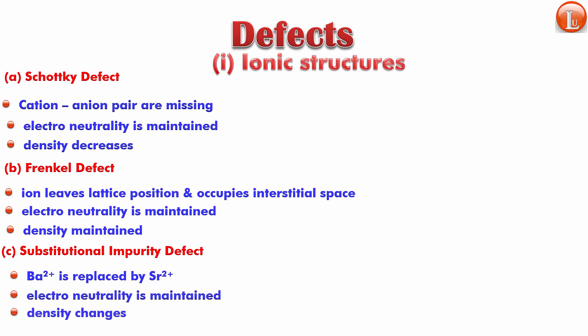The next is called interstitial impurity. Obviously something else comes and occupies the interstitial position. For example, hydrogen is trapped in a titanium carbide. So in a titanium carbide structure, hydrogen gets trapped in the voids. The density definitely increases; electroneutrality remains the same.